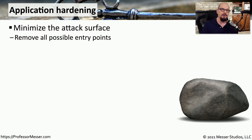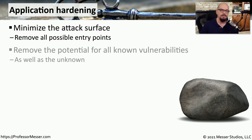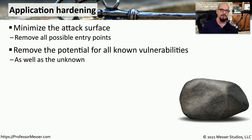As a security professional, there are a number of techniques that you can use to make sure that your applications are as secure as possible. In this video, we're going to focus on application hardening, which means we're going to minimize the number of attack surfaces and hopefully limit the ability of an attacker to exploit an application. We're not only trying to protect against well-known attack points, but hopefully during our hardening process, we're able to protect against unknown attack points as well.